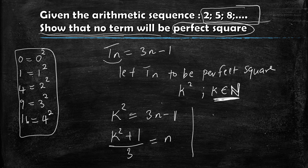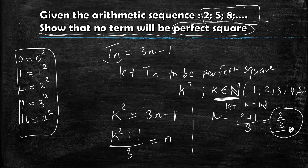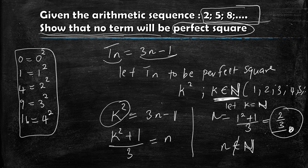Where k is an element of the natural numbers, I can substitute any natural number. Natural numbers are 1, 2, 3, 4, 5, and so on. Let k = 1, since 1 is a natural number: n = (1² + 1) / 3 = 2/3. When I calculate n, I'm getting 2/3, and we know that 2/3 is not an element of the natural numbers. So n is not a natural number, meaning there's no valid position for a perfect square in this sequence.